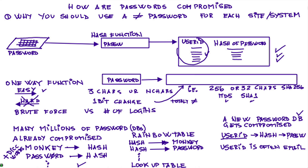Now, how do we protect against rainbow table attacks? This happens to databases that are poorly protected with only a hash. Adding a little bit of salt fixes this problem. At the moment the password is entered, before it's passed to the hash function, you generate a random number called a salt — or a nonce. It's not secret, but it is random. When computing the hash, you concatenate the password with the nonce, and then hash that combined value.